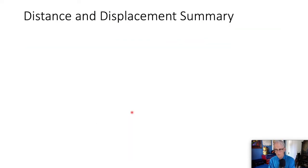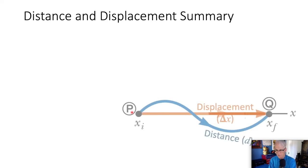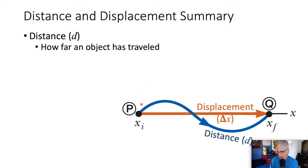Let's summarize what we've learned so far. First, distance is how far an object has traveled. We'll measure along the path that we went. And that will be our distance. We'll use a small d as its variable or symbol. We'll use meters to measure distance.